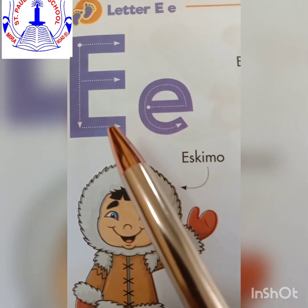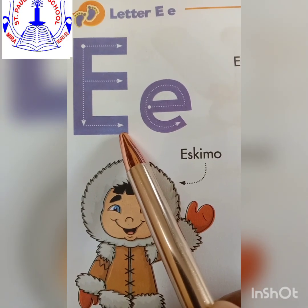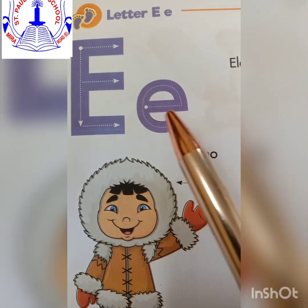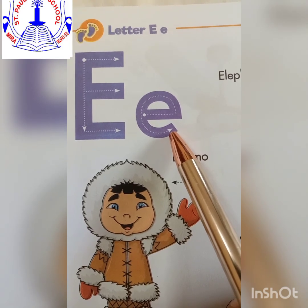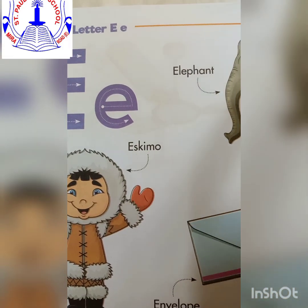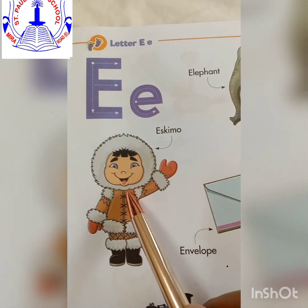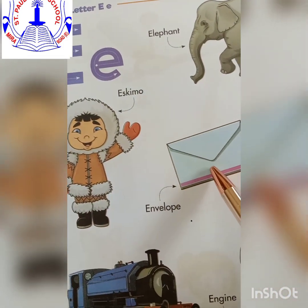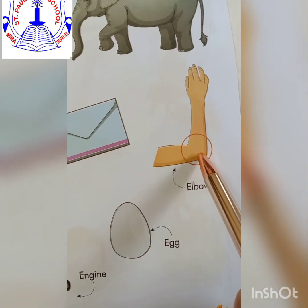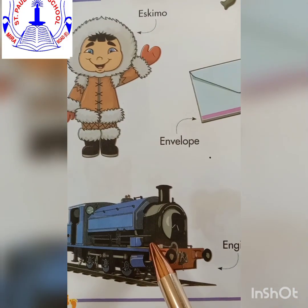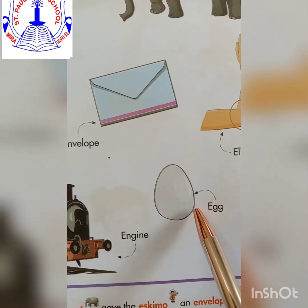Now let's learn the alphabet E. This is capital E and this is small e. E says 'eh': elephant, schema, envelope, elbow, engine, egg.